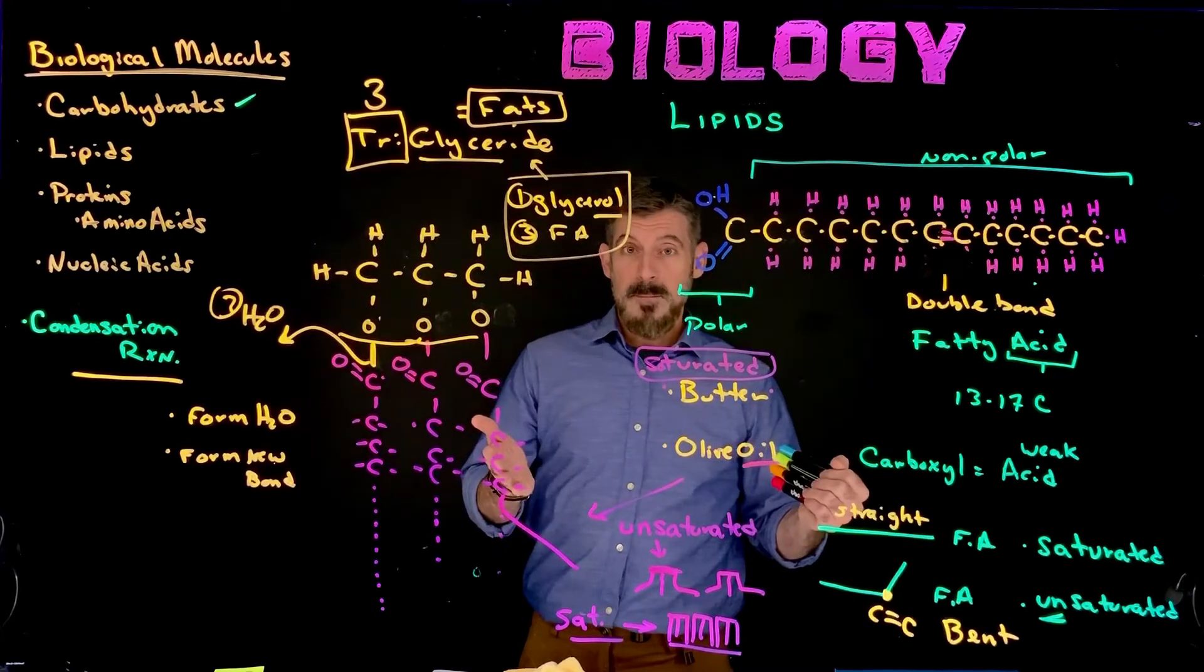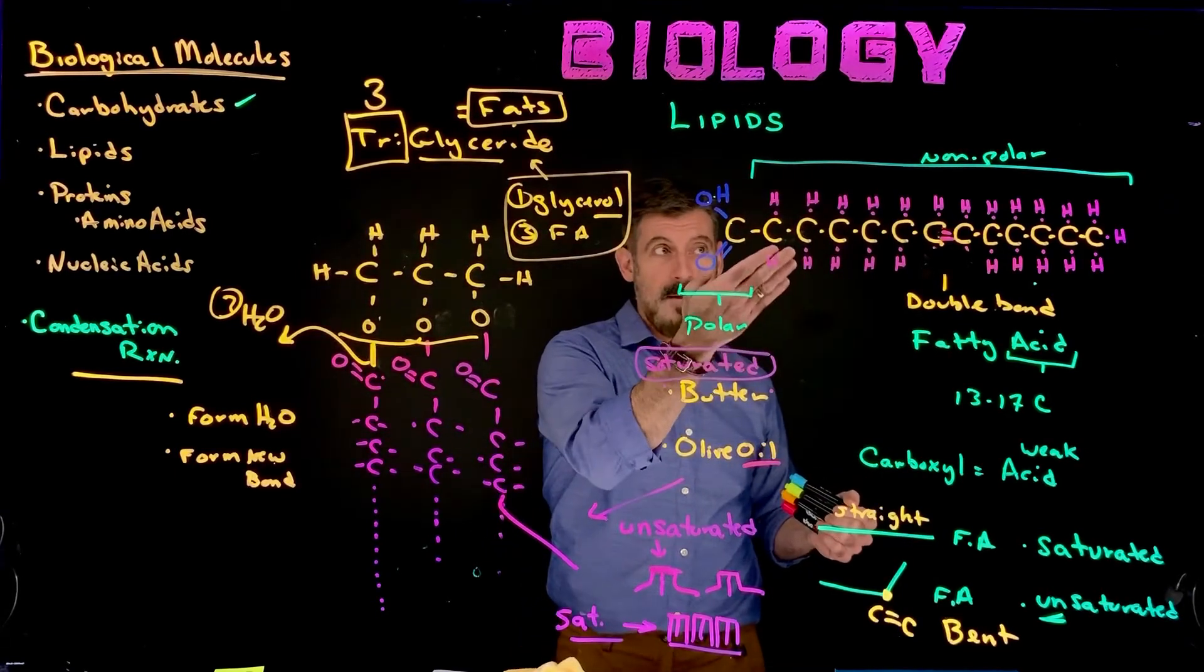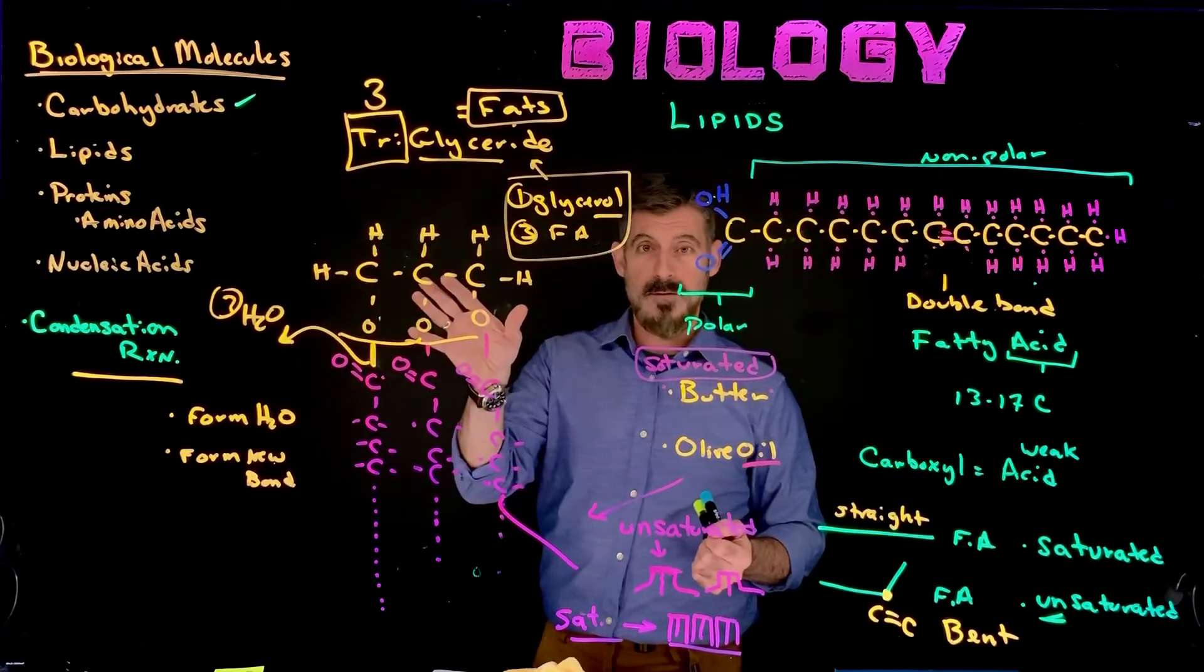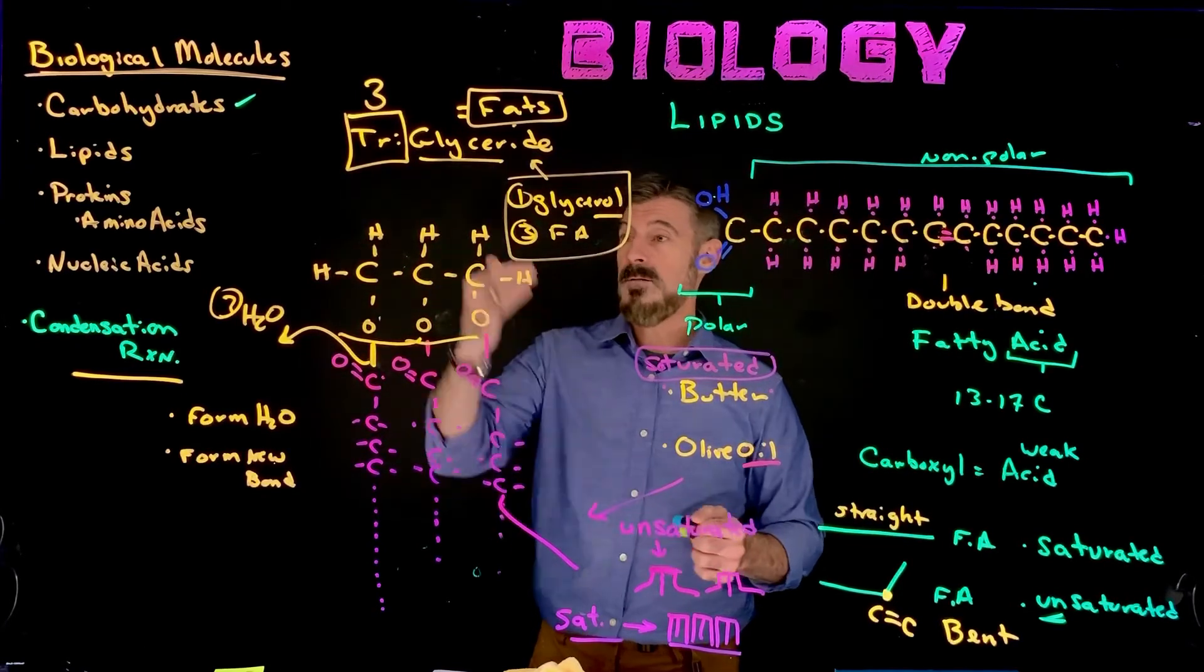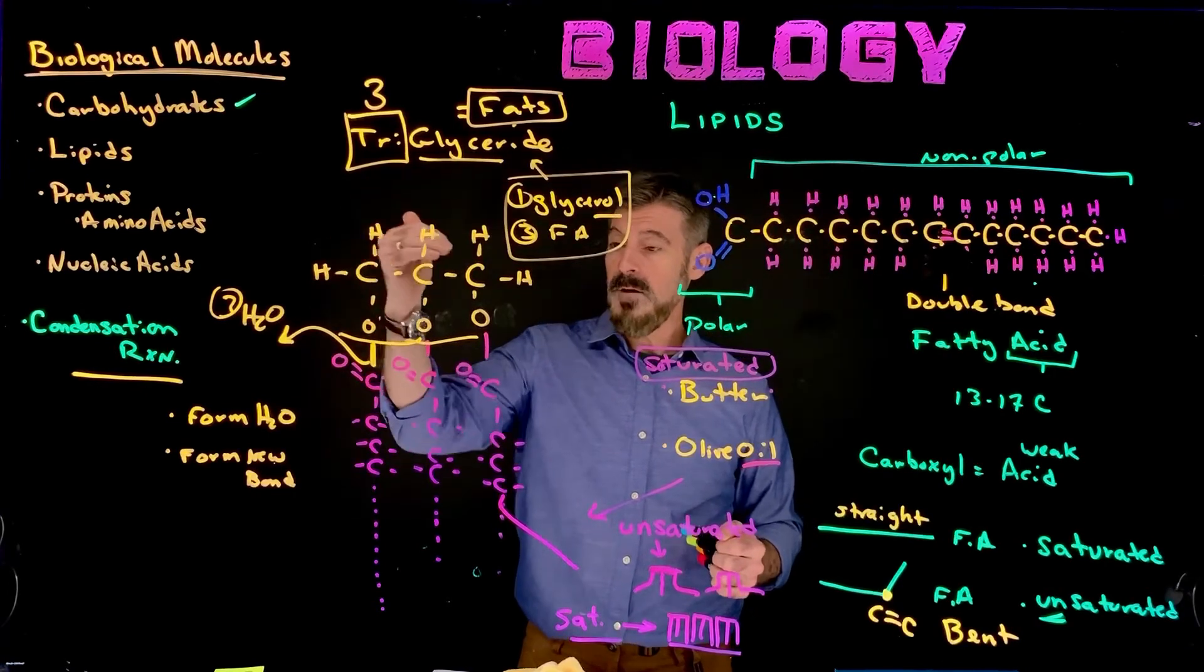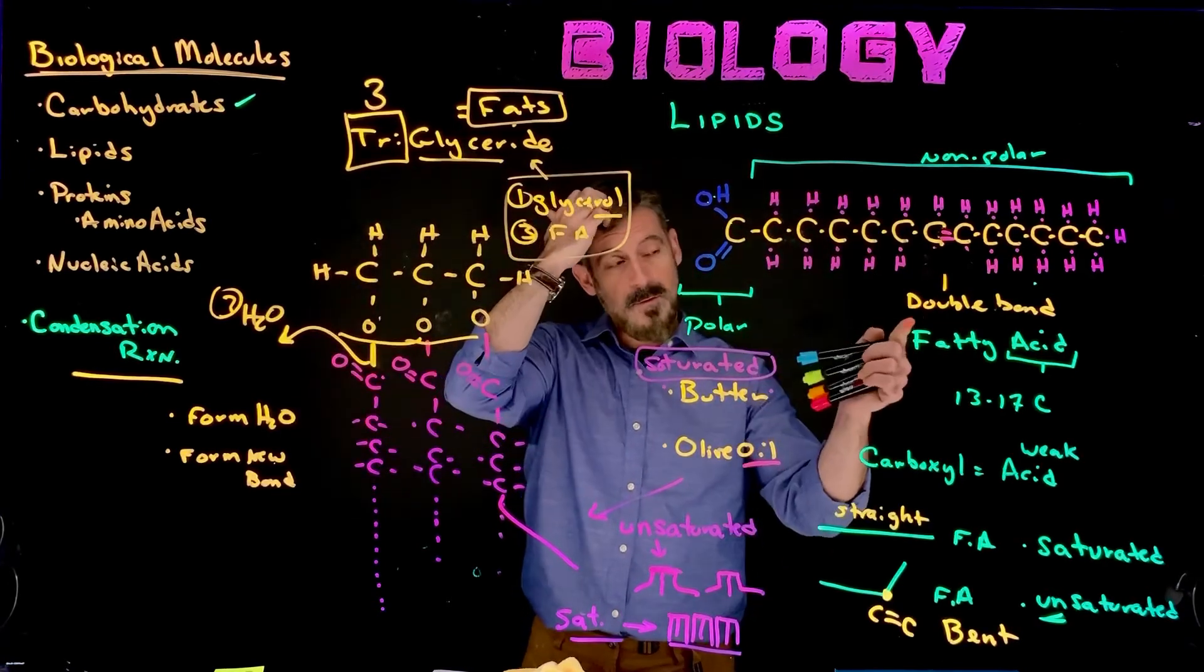So our first type of lipid to look at, which starts off with a fatty acid, is the triglyceride. And so what you need to know is triglycerides are made up of one glycerol, three fatty acids. What's the structure of a fatty acid?